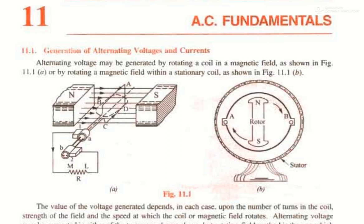Hello class. In today's session we are going to discuss about AC fundamentals, focusing on the generation of alternating voltages and currents. In general, an electric current, whether AC or DC, is produced by means of an electric machine known as a generator — a device which converts mechanical energy into electrical energy. The mechanical energy is provided by a steam turbine, an internal combustion engine, water turbine, or any other prime mover which drives the generator.